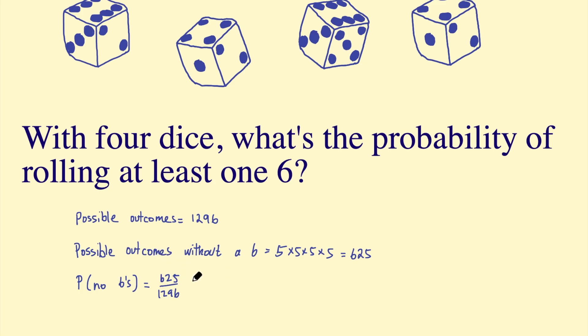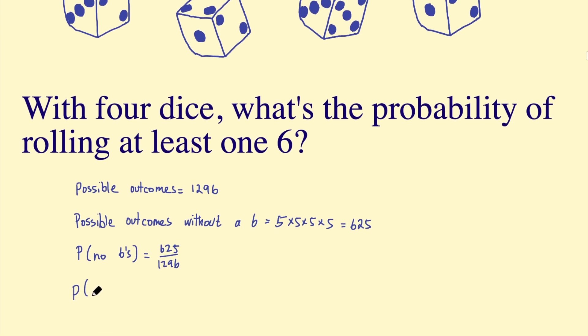And then notice that rolling at least one six will be the rest of the possibilities. So it will be 1 minus this probability. So the probability of at least one six, this will equal 1 minus the probability of no sixes. So this is 1 minus 625/1,296, which is 671/1,296, which is approximately 51.8%. And so from that, we can say you're slightly more likely to get at least one six from four dice than no sixes.